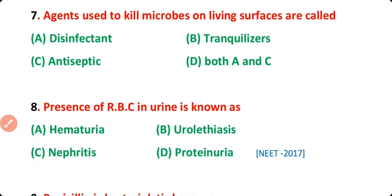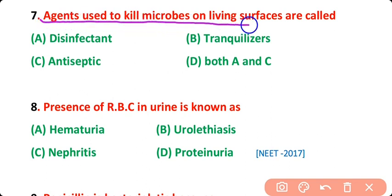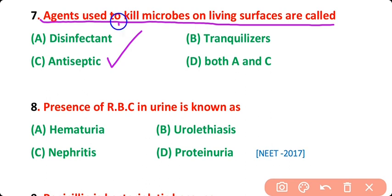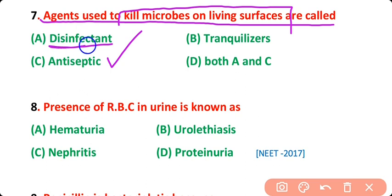Question number 7: Agents that are used to kill microbes on living surfaces are called disinfectants, tranquilizers, antiseptics, or both A and C? The correct answer is option C — antiseptics. Antiseptics are agents used to kill microbes on living surfaces, while disinfectants are agents used to kill microbes on different objects.